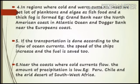In regions where cold and warm currents meet, we get a lot of plankton and algae as fish food. Examples include the Grand Bank near the North American coast in the Atlantic Ocean and the Dogger Bank near the European coast. At these meeting places, a thick fog is also formed. This fog creates problems for transportation on the water surface.